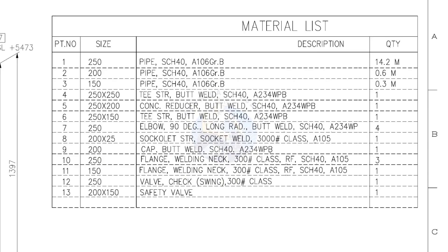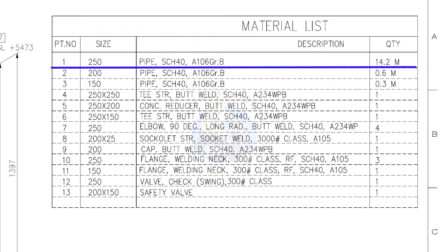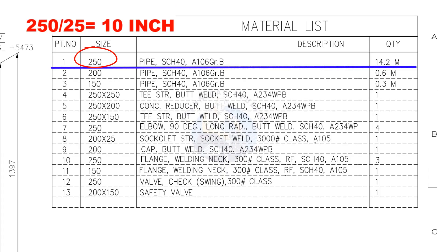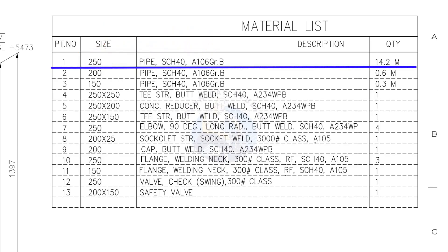Let us start with the material list. Part number 1 — pipe nominal size is 250. If you want to convert this into inches, divide it by 25 and you will get the nominal pipe size in inches. What is the nominal pipe size of this 250 NB pipe in inches? Divide 250 by 25 — the answer is 10 inches. What is the inch size of the 200 NB pipe? Divide 200 by 25 — the answer is 8 inches.